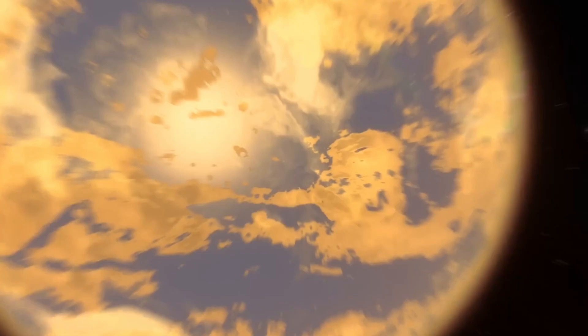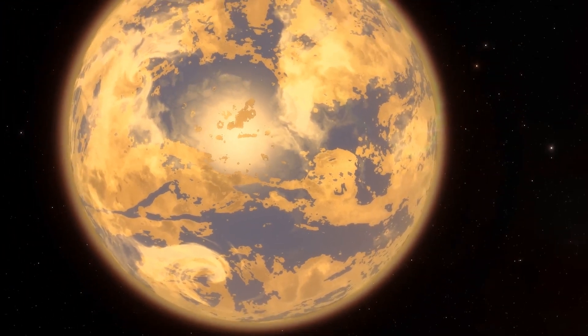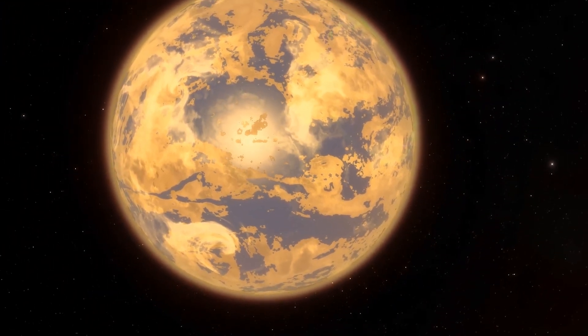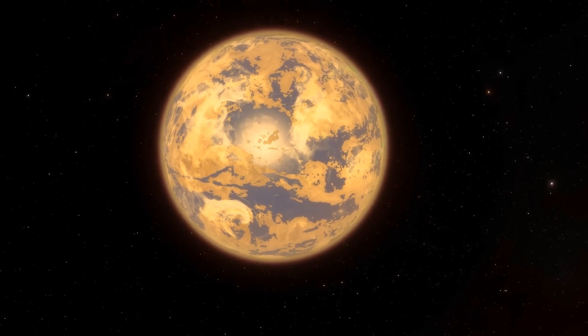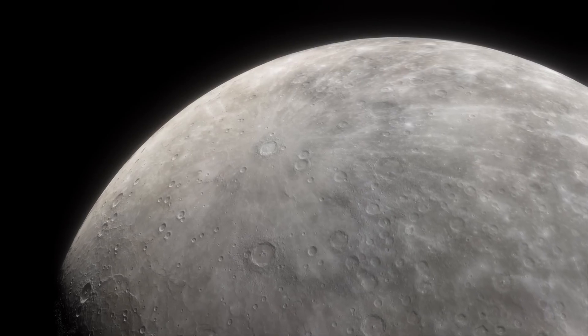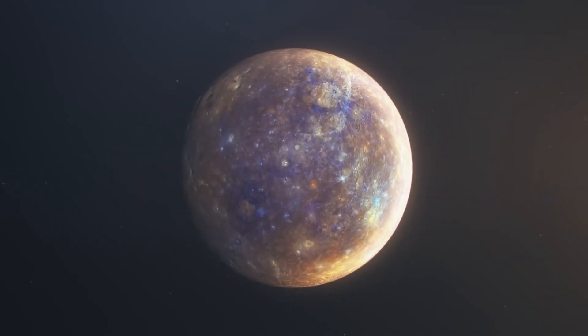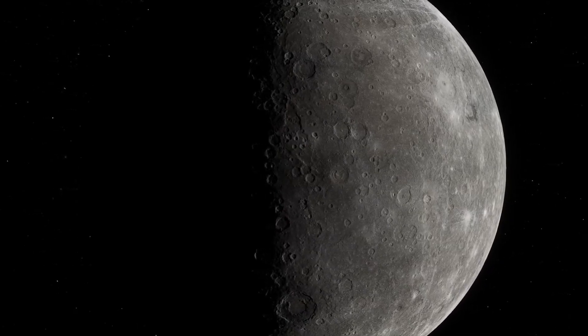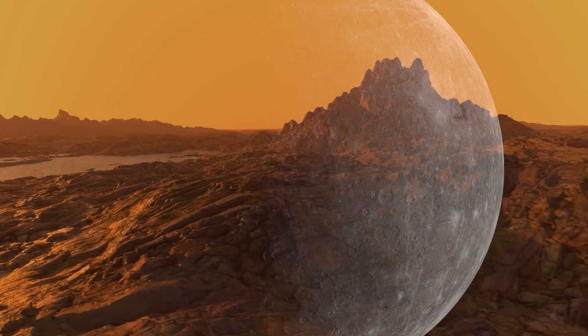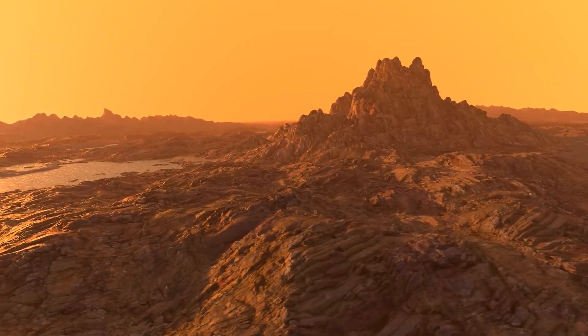However, there are significant differences. The first is the location of the two planets in their respective solar systems. Proxima b is much closer to its parent star, at only 0.05 AU, while Mercury is at a distance of 0.39 AU from the Sun. This proximity would make Proxima b an extremely hot planet, but because Proxima Centauri is a dim red dwarf, the planet receives only 60% of the energy that the Earth receives from the Sun, placing it in the habitable zone where life could exist.